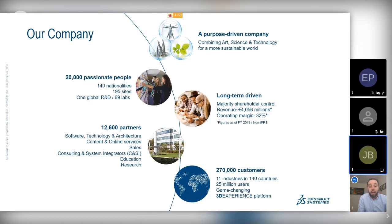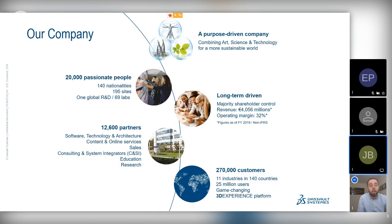Our offices span the globe, with many here in the UK but centered out of our three main headquarters in Boston, Paris, and Shanghai. Dassault Systèmes has the largest PLM and 3D market share, with over 270,000 customers working within 11 industries worldwide. We work with over 12,000 partners, increasing knowledge and know-how across technology, sales, service, education, and research.